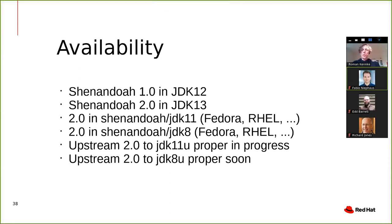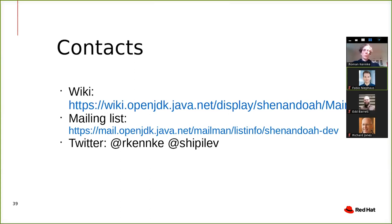The old Shenandoah 1.0 was in JDK 12. We changed to the new scheme in JDK 13, and we are back-porting all our work to JDK 11 and JDK 8, which we ship in Fedora and Enterprise Linux — available in the OpenJDK project repositories Shenandoah JDK 11 and Shenandoah JDK 8. We are currently working on upstreaming this code to JDK 11 updates and JDK 8 updates. We have a wiki as the entry point — visit it or check out the mailing list. You can also contact us on Twitter. Thank you.